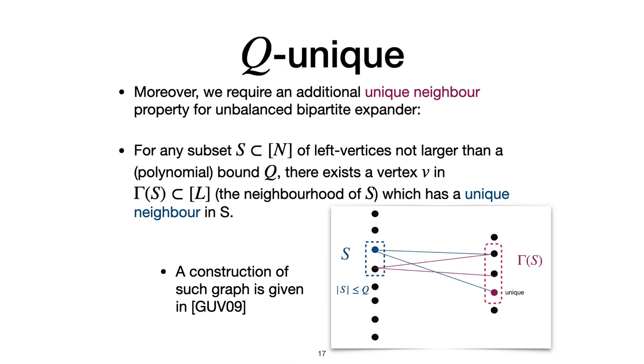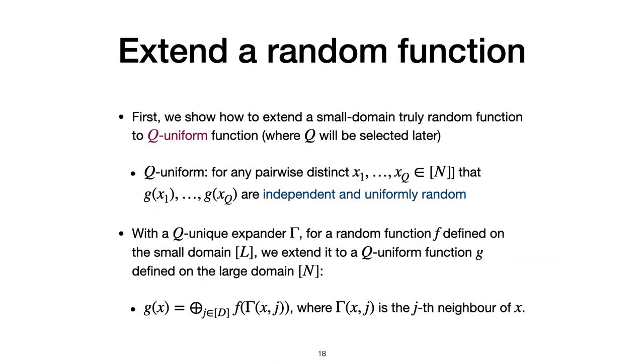So, a construction of such QUnique expander is given in GUV09. Now we have all the tools prepared. Let's start with extending a random function to QUniform function first. So here, QUniform means for any pairwise distinct, from x1 to xq, the g of x1 to g of xq are independent and uniformly random. With this QUnique expander, for a random function defined on the small domain, we can extend it to QUniform function g defined on the large domain by adding all of these terms together.